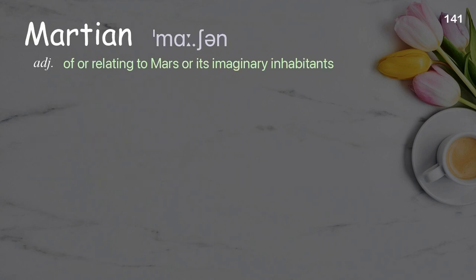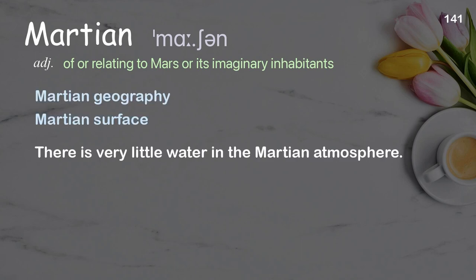Martian. Of or relating to Mars or its imaginary inhabitants. Examples: Martian geography, Martian surface. There is very little water in the Martian atmosphere.